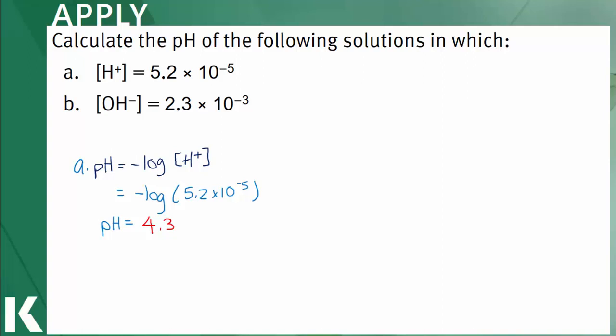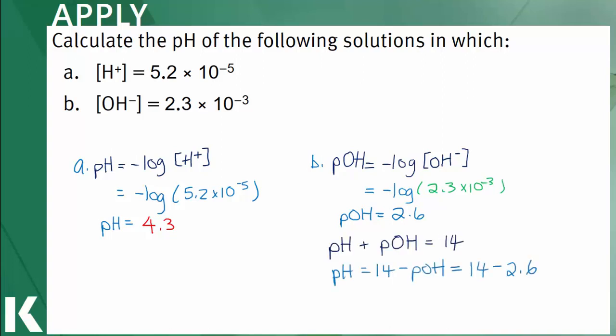In B, we're asked to calculate the pH given the hydroxide ion concentration. One additional step here, but still doable. First, calculate the pOH by using the equation pOH equals negative log of the concentration of the hydroxide ion. The pOH is 2.6. Then, use the equality pH plus pOH equals 14 to give us the pH of 11.4.